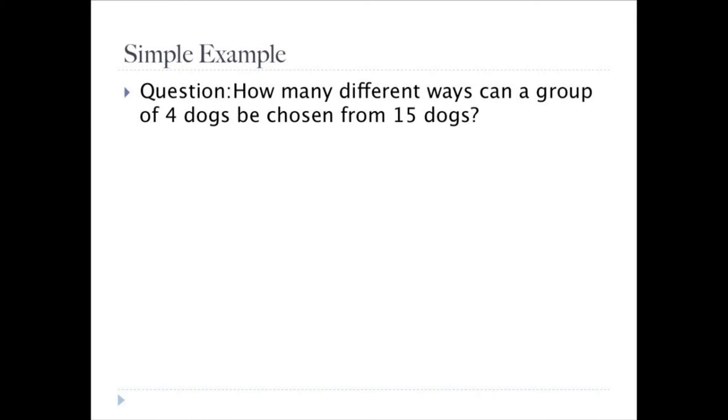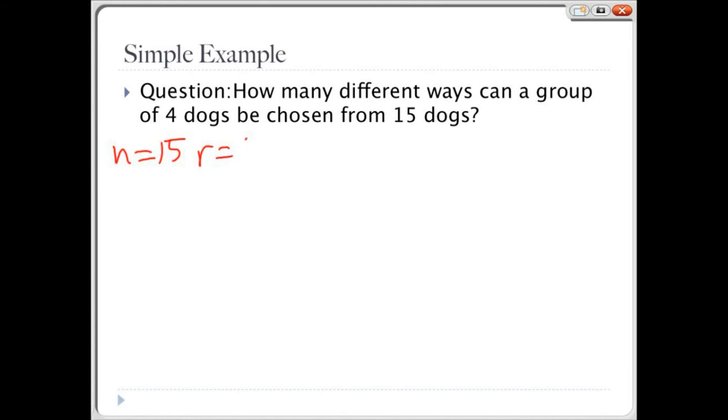So now that we understand the combination formula, let's use it by starting with a simple example. Remember though, that this example shows combinations without repetition. We will be explaining combinations with repetition afterwards. So, our question is, how many different ways can a group of 4 dogs be chosen from 15 dogs? From the question, we see that n would be the total number of elements, which is 15, and r would be 4.